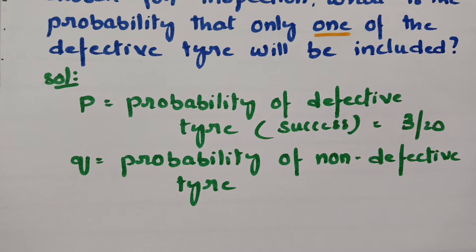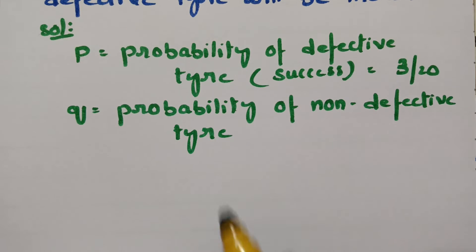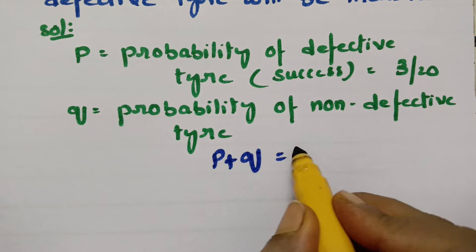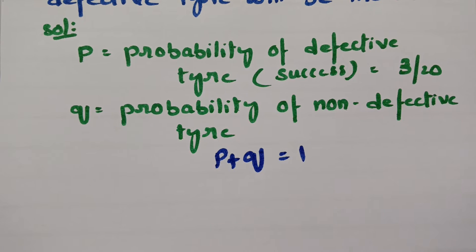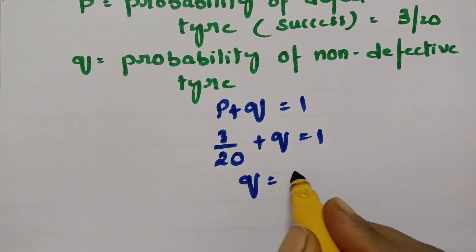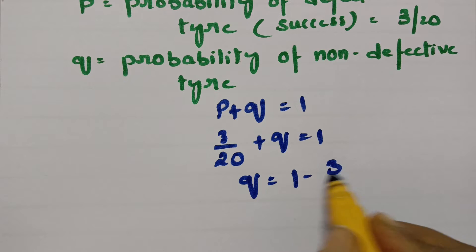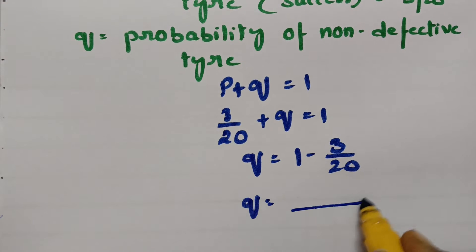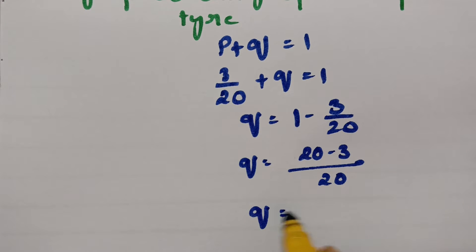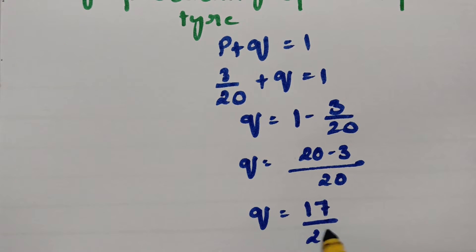Next, we find the probability of a non-defective tire, Q. We know that the total probability P plus Q equals 1. So P = 3/20 plus Q = 1. Therefore Q = 1 minus 3/20. Taking 20 as LCM, this gives 20 minus 3, so Q = 17/20.